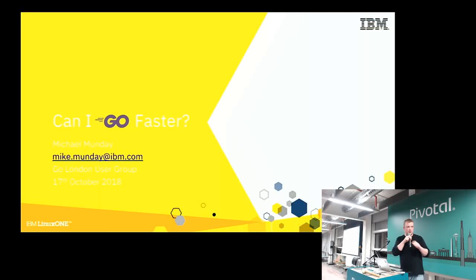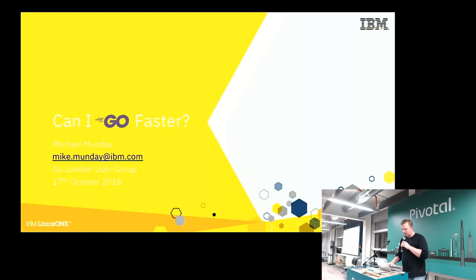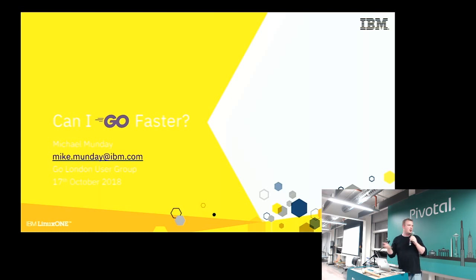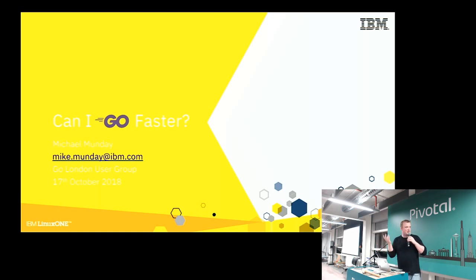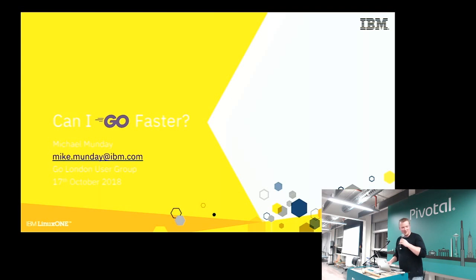Hi, I'm Michael. I work for IBM, and I'm going to talk a bit today about the Go compiler and essentially how to implement a simple optimization in the Go compiler. One advantage of it being open source is you can just go in and make your optimization, make everything go faster.